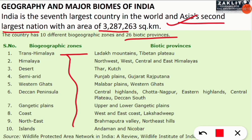Under Trans-Himalaya, the biotic provinces are the Ladakh Mountains and the Tibetan Plateau. Under the Himalaya zone, the biotic provinces are Northwest, West, Central, and East Himalaya — four zones coming under the biotic provinces.